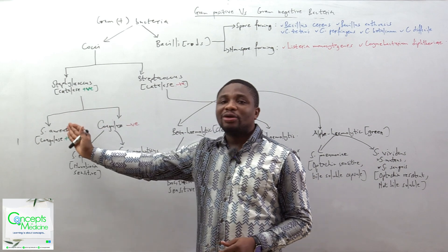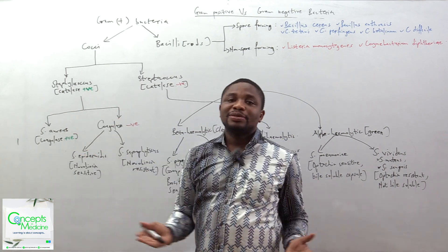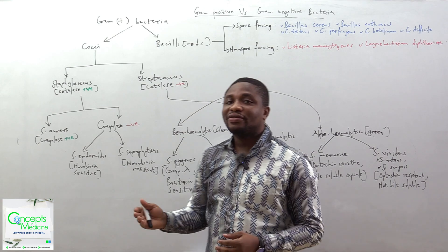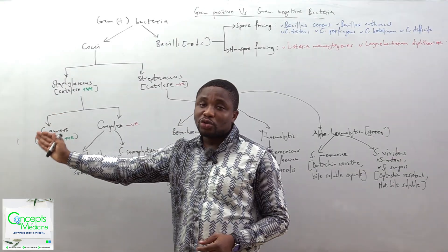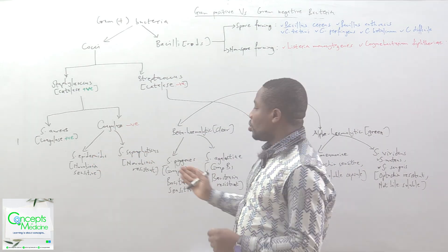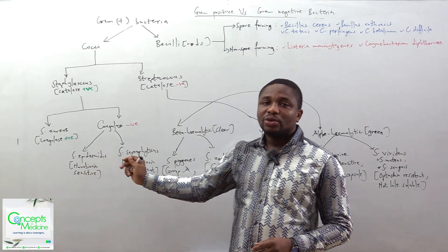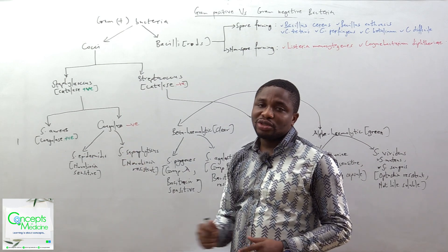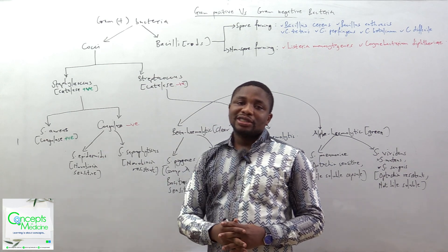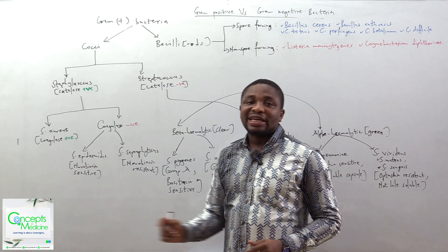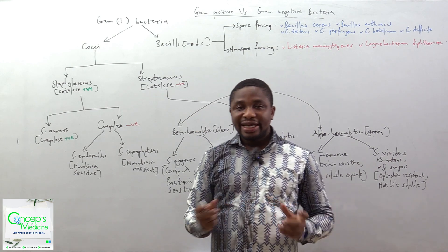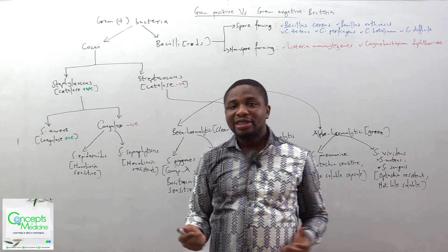We can further divide the staphylococcus, which are catalase positive, into groups based on whether they possess the enzyme coagulase or not. We will have the coagulase positive — which is Staphylococcus aureus — and coagulase negative. The coagulase negative can be subdivided into Staphylococcus epidermidis, which is novobiocin sensitive, and Staphylococcus saprophyticus, which is novobiocin resistant. Both Staphylococcus epidermidis and Staphylococcus saprophyticus are coagulase negative, even though they are catalase positive.